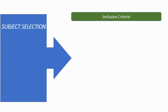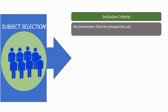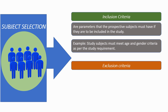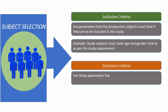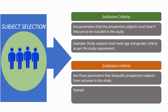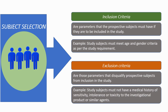Subject selection. Subjects diagnosed with the intended indication who meet the inclusion and exclusion criteria will be eligible for participation. Inclusion criteria are the parameters that a prospective subject must have to be included in the study — for example, study subjects must meet age and gender criteria as per the study requirement. Exclusion criteria are those parameters that disqualify a prospective subject from inclusion in the study — for example, study subjects must not have a medical history of sensitivity, intolerance, or toxicity to the investigational product or similar agents.